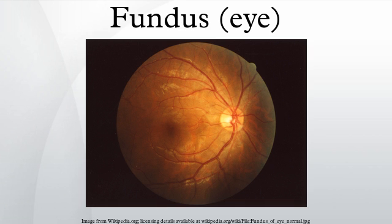The eye's fundus is the only part of the human body where the microcirculation can be observed directly. The diameter of the blood vessels around the optic disc are about 150 μm, and an ophthalmoscope allows observation of blood vessels with diameters as small as 10 μm.